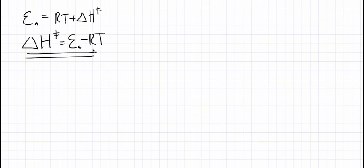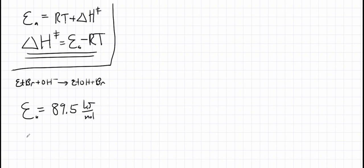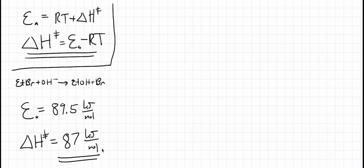Let's do an example specifically for that SN2 reaction: ethyl bromide plus hydroxide undergoing substitution to give ethyl alcohol plus bromide. If we look up the activation energy — or measure it from temperature-dependent experiments — it is 89.5 kilojoules per mole. At room temperature, delta H double dagger equals Ea minus RT, which gives approximately 87 kilojoules per mole. So the activation enthalpy is slightly different from the activation energy, but of the same order of magnitude.